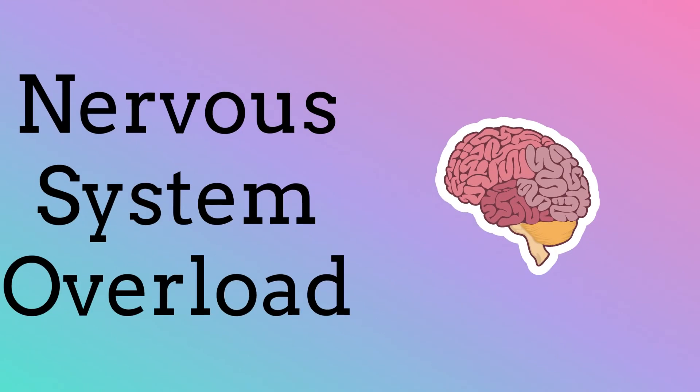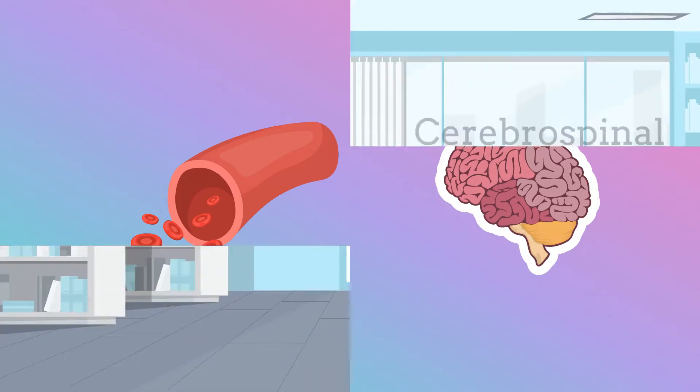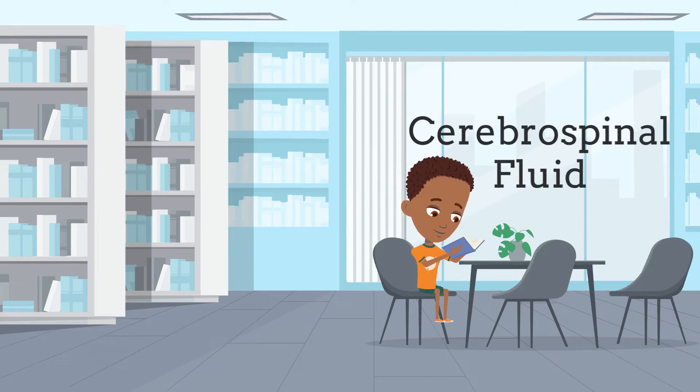The answer is called nervous system overload. Our brain is a mushy mass of nerves and blood vessels, literally floating in a clear and colorless liquid known as cerebrospinal fluid.